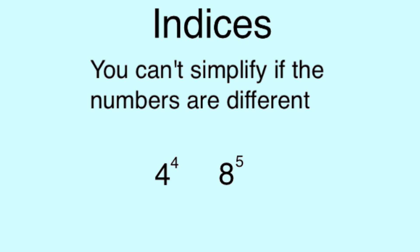But the final rule we're looking at is that you can't simplify if the numbers are different. So 4 to the power of 4 and 8 to the power of 5, we can't simplify as the 4 and 8 are different values.